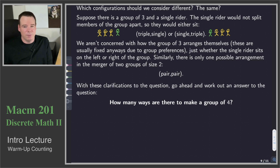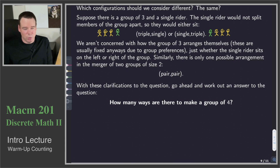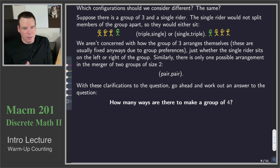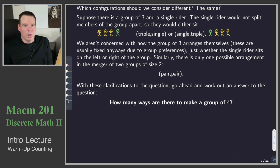So this is just a bit of preliminary discussion about what we consider the same and what we consider different. The bottom line really is: if you think about the lift attendant loading the chairs, what they would say to verbalize the composition on the chair — triple-single, single-triple, pair-pair, or double-double. Those are the kinds of arrangements we are considering; those are the things we want to count.